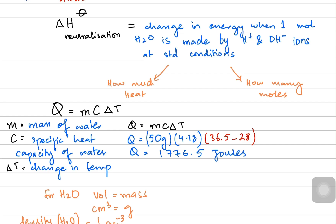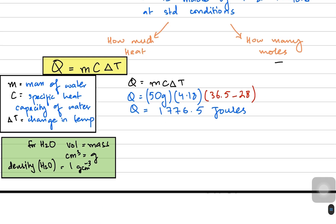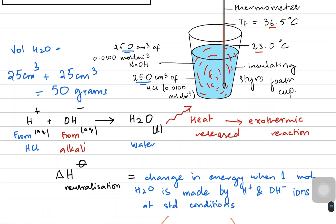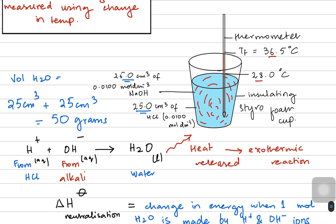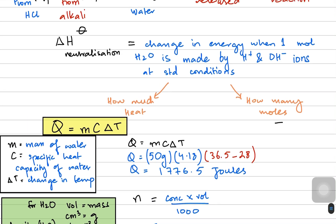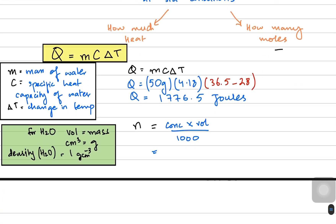The calculated heat released is 1776.5 joules. Now we calculate the moles using the formula: moles = concentration × volume / 1000. The concentration was 0.0100 mol/dm³ and the volume was 25 cm³, giving 0.00025 moles, or 2.50 × 10⁻⁴ moles.